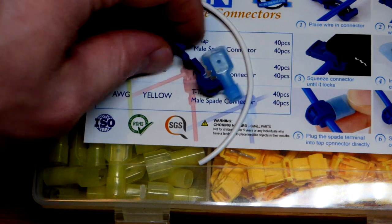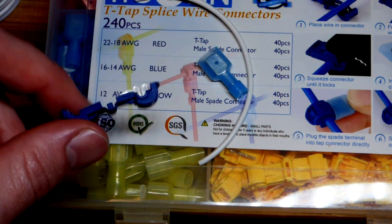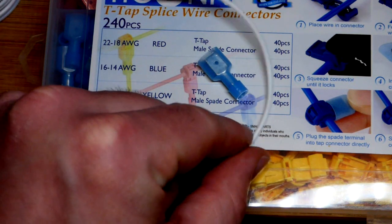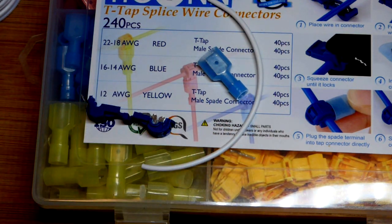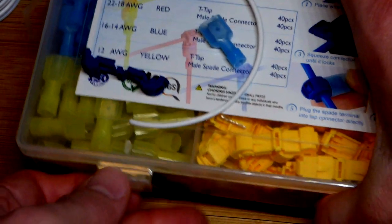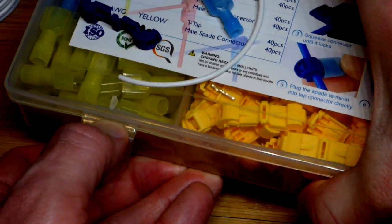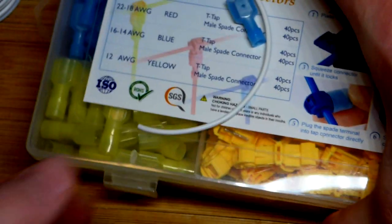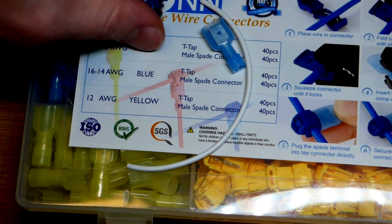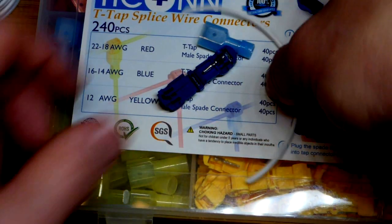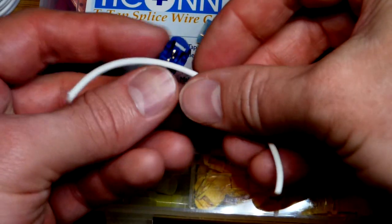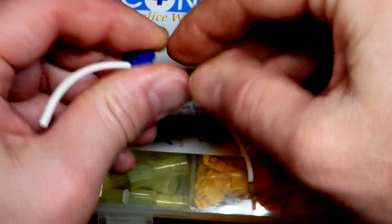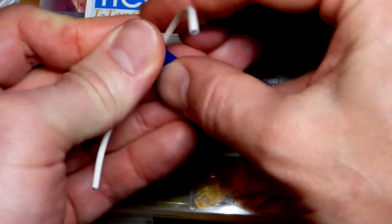We're going to use these T-Connectors. The blue ones are for 16 to 14 wire gauge. Here's the 16 gauge wire, the smaller. This kit's pretty nice - you have to push down to get it to snap open. It doesn't just snap open by accident. We can take a straight piece of wire that we want to make a three-way connection with.